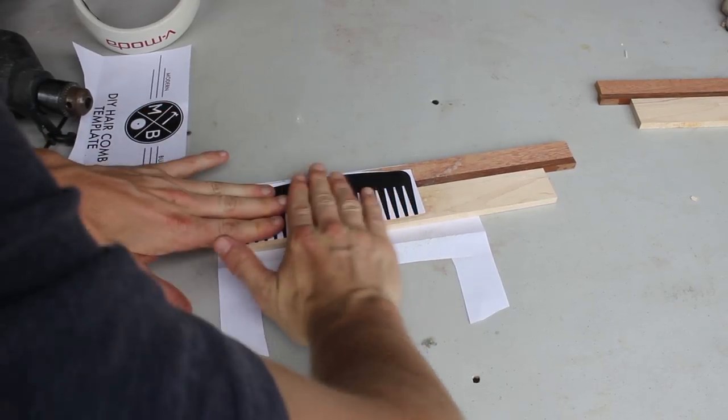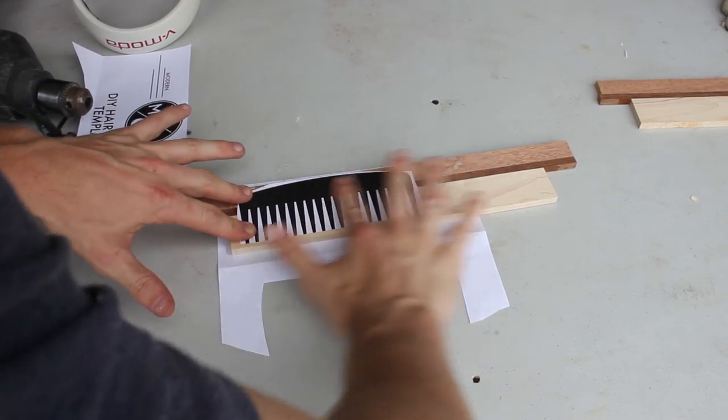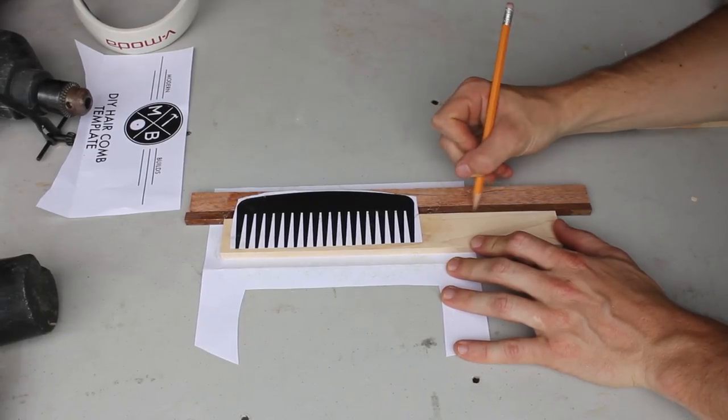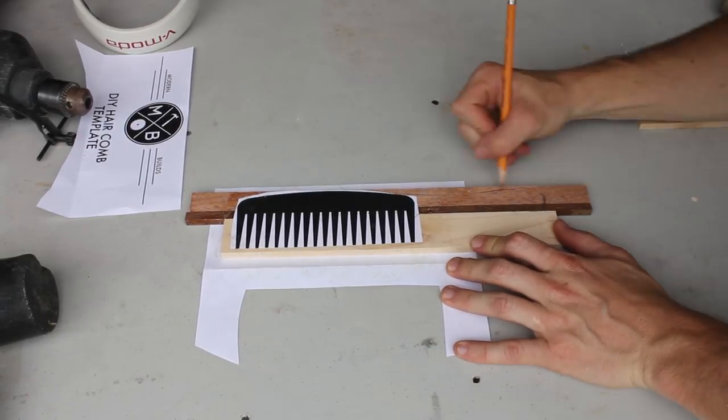So I cut out the template and used a bit of spray glue and attached it to one side of my scrap piece. I also wanted my comb to have a handle so I modified the design a bit to fit my own needs.